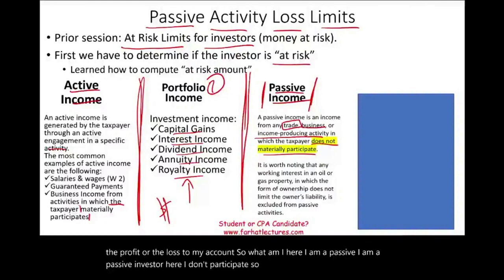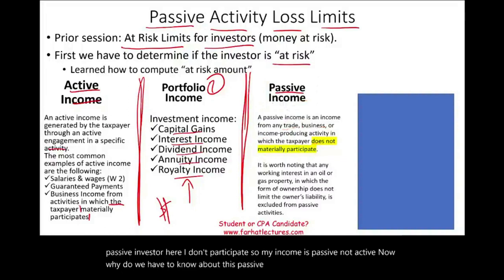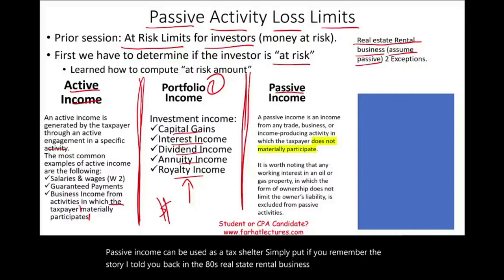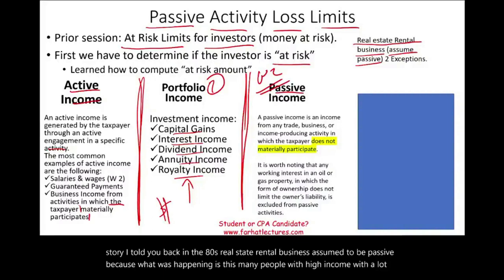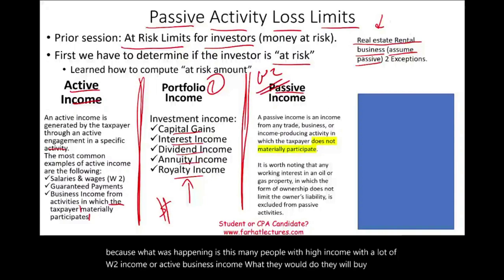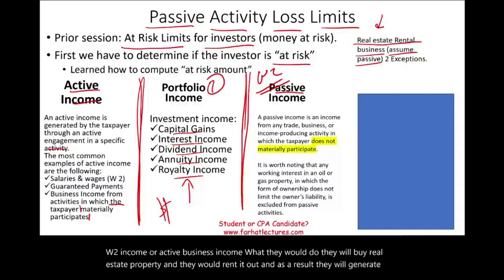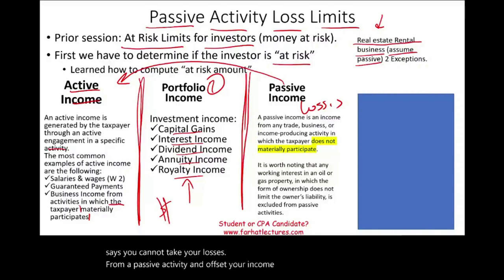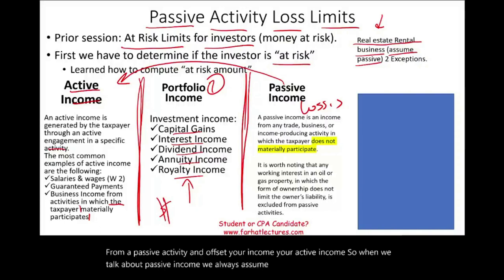Why do we need to know about passive income? Passive income can be used as a tax shelter. Back in the 80s, real estate rental business was assumed to be passive because many people with high W-2 income or active business income would buy rental real estate, generate losses, but were not actively participating. So the IRS says you cannot take losses from a passive activity and offset your active income. Real estate rental business is assumed passive, with two exceptions we'll discuss later.